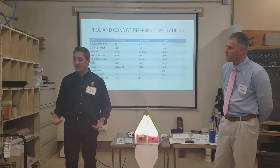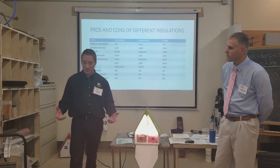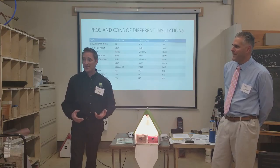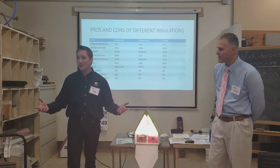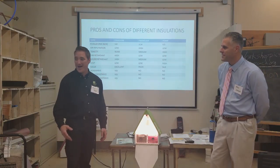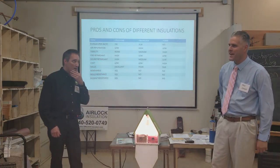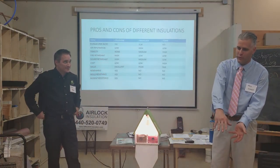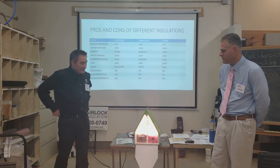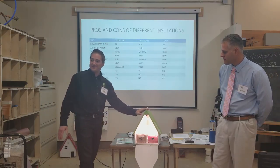If you ever go in the attic of a cellulose house, whether existing or new construction, and you drop the flashlight, you lose it — you're in the dark. That happens to me all the time when I'm insulating in an attic: the light falls over and the cellulose is completely dark. Any questions on radiant heat?